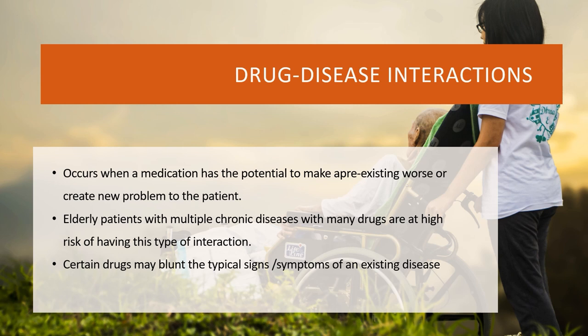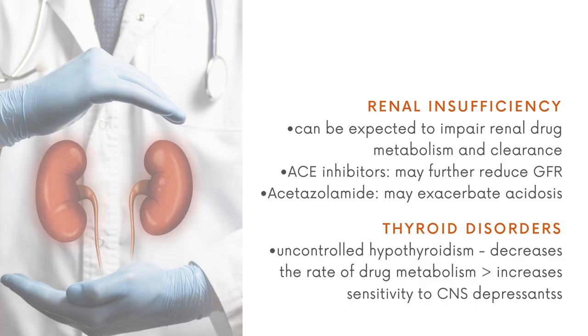Drug-disease interaction occurs when a medication can potentially worsen a pre-existing medical problem in the patient. For example, elderly patients with multiple chronic diseases might have a lot of medications and are prone to these interactions. Certain drugs may also blunt the typical signs and symptoms of existing diseases.